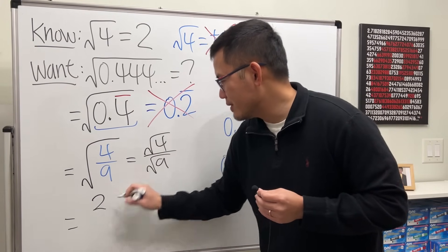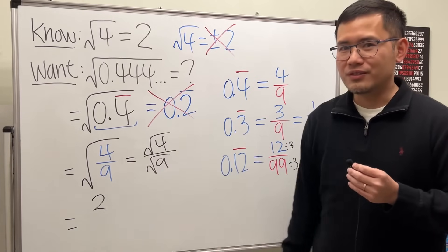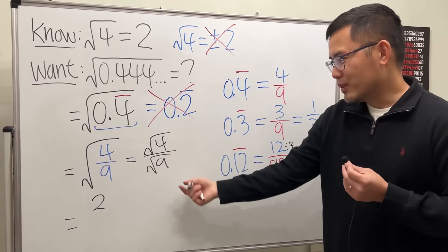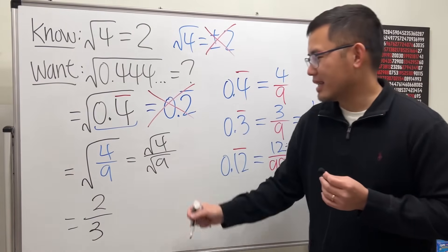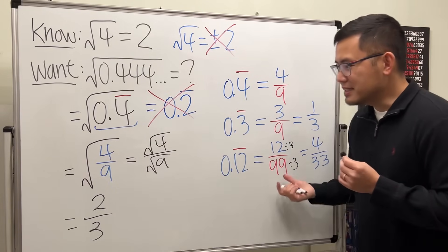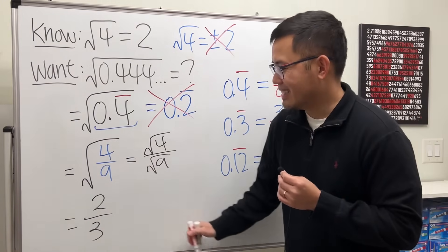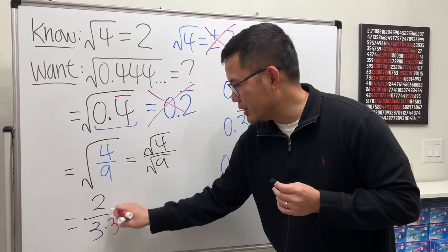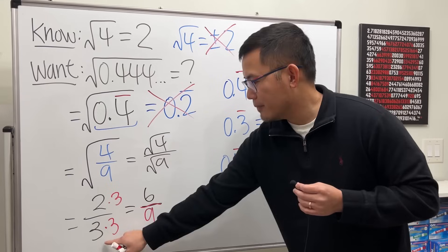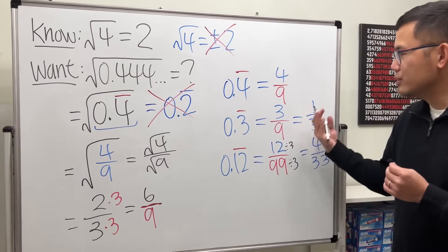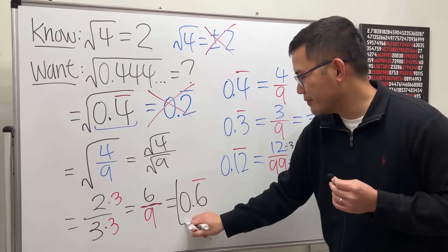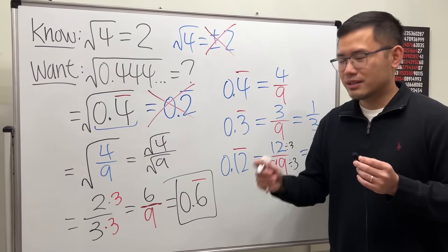That gives us 2 over — and square root of 9 is 3, since 3 times 3 is 9 — so altogether that's equal to 2 over 3. Now can we use this idea backwards? Sure. Multiply the top and bottom by 3, so we get 6 on top over 9 on the bottom. With 9 on the bottom, going backwards, this means we have 0.6 repeating — 0.66666 forever.